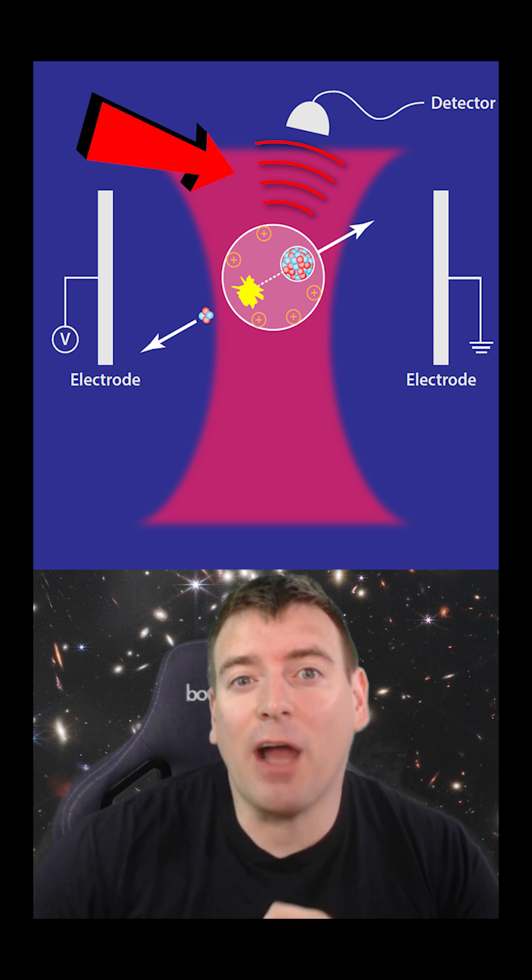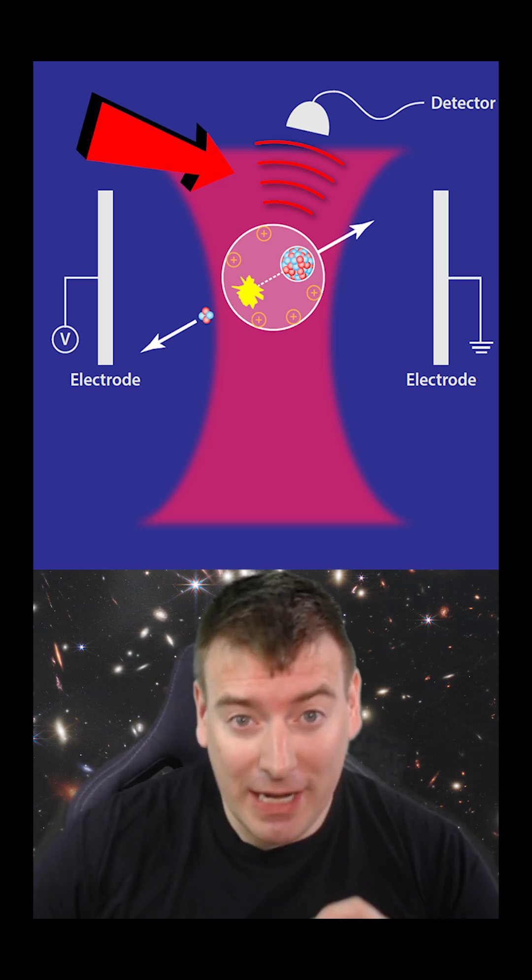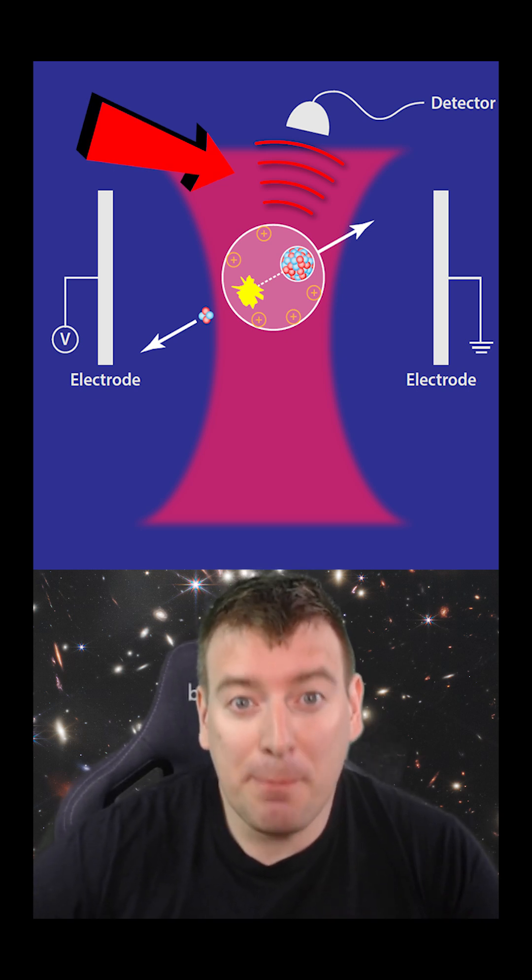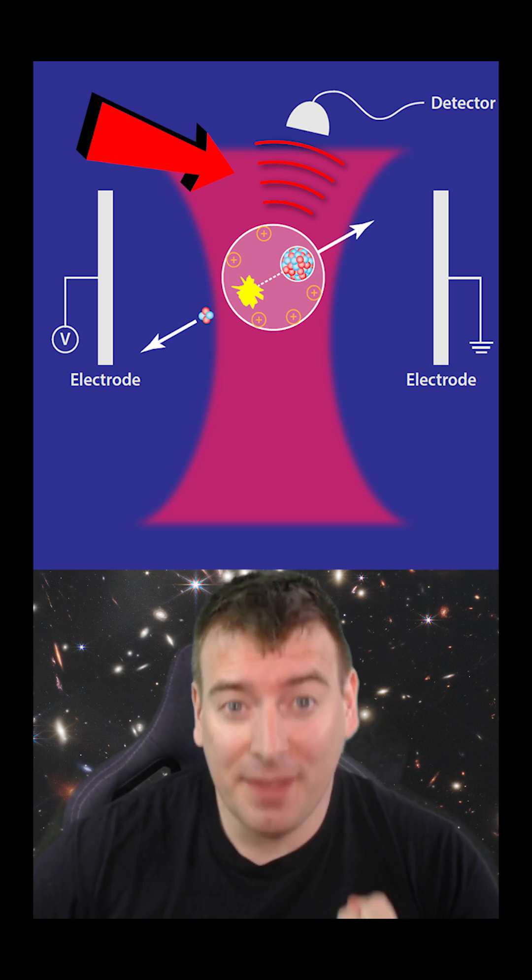By continuously scattering light off the microsphere, these tiny shifts can be captured, despite the microsphere being a trillion times heavier than an alpha particle.